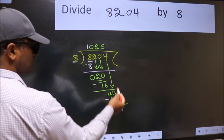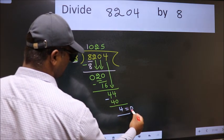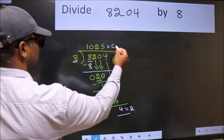No more numbers to bring down. So we stop here. This is our remainder and this is our quotient.